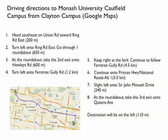You've probably had to give instructions to somebody before about how to go from A to B, maybe walking instructions or on the road. Here are some instructions for the journey from the Clayton campus of Monash University to Caulfield campus. For instance, head south-east on Union Road towards Ring Road East, and then the distance is given as 200 metres.